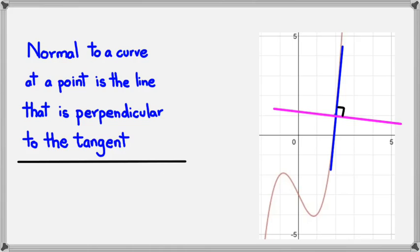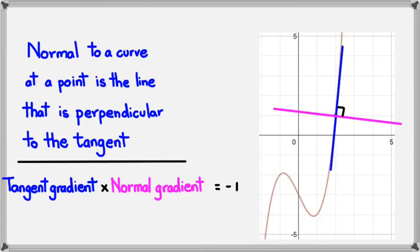Which means, once I figure out the gradient of the tangent, I could actually work out the gradient of the normal. And the way it works is that the tangent gradient multiplied by the normal gradient should equal -1. In some cases, people like to use this, where if the tangent gradient is written as m, then the normal gradient would be written as -1/m. That's just another way of looking at it as well.